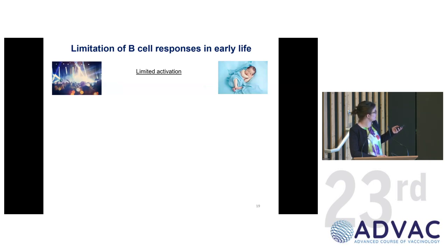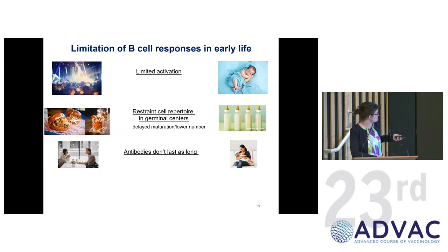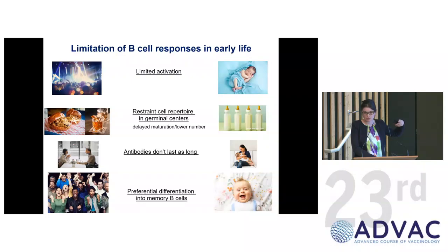In summary, comparing the adult germinal center response with that of a baby: we have limited B cell activation, a restrained and less diverse repertoire in the germinal center of newborns — like monotonous food — delayed maturation, lower cell numbers, and antibodies that don't last as long. The differentiation preferentially goes into memory B cells compared to adult life, where we boost antibody responses and maintain long-lasting antibodies via plasma cells in the bone marrow.